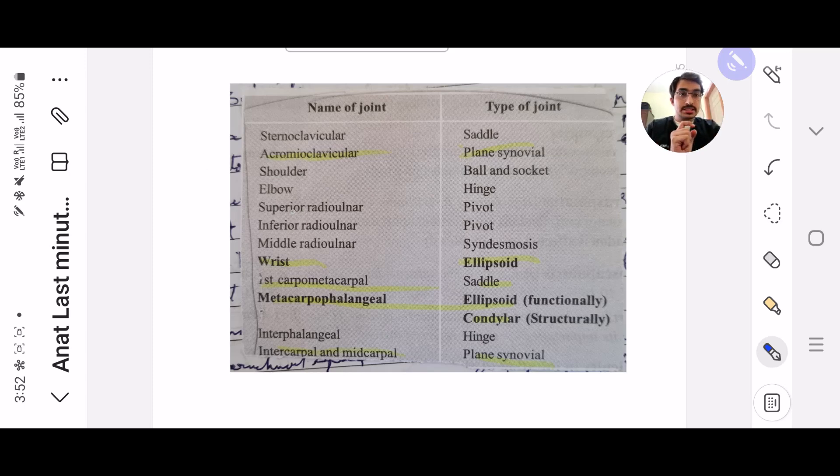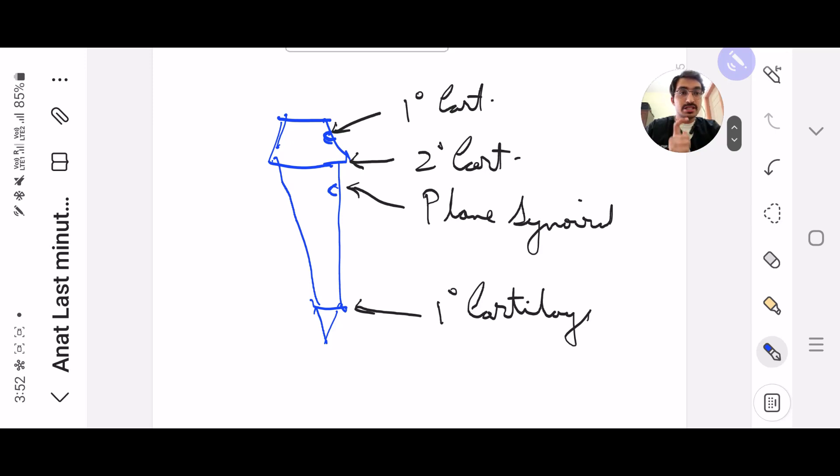The first slide is of the types of joints. So this is the cutout of all the types of joints - names of joints, types of joints. Have you taken it? Next.